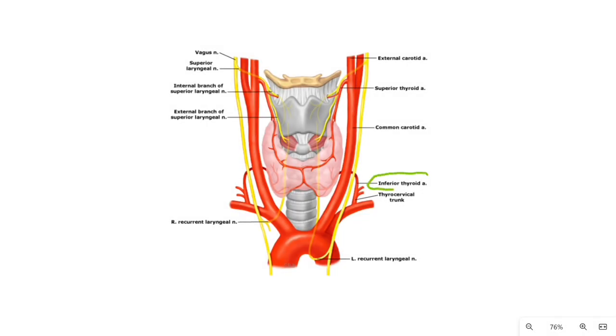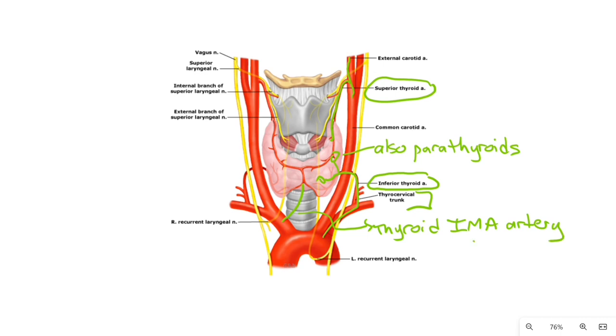The inferior thyroid artery is from the thyrocervical trunk. It also supplies all of the parathyroids. Superior thyroid artery comes from the external carotid artery. The thyroid ima artery comes from the innominate and goes to the isthmus but is present in only 1% of people.